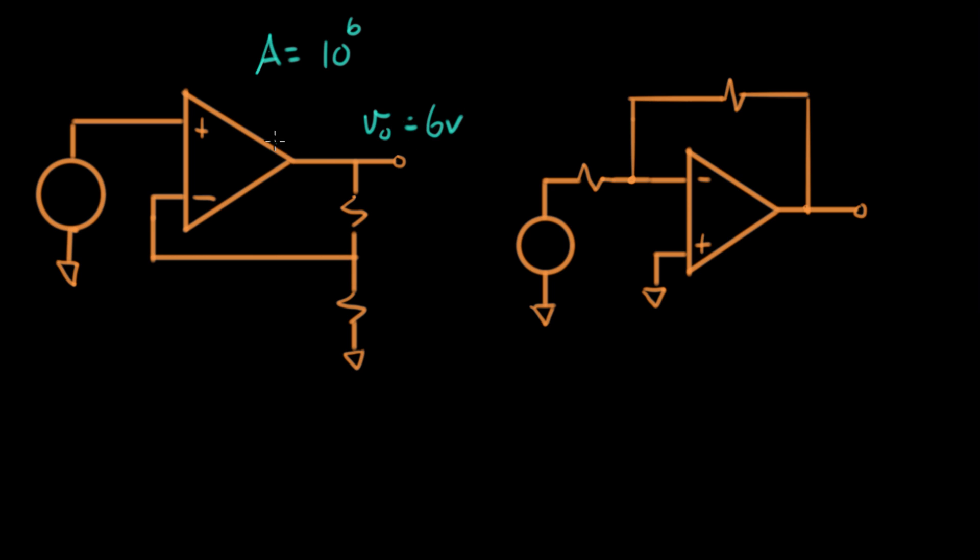And you remember, what's not shown here in this circuit is the power supply is going to both of these op amps, plus or minus, let's say it's plus or minus 12 volts. Those power supplies are implicit, they're not shown in the diagram, but we know they're there.